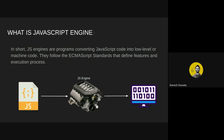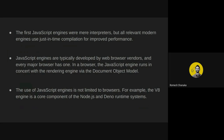Whether we run JavaScript in the browser, in Node.js, or on an IoT device, it is always the engine that runs it for us. The first JavaScript engines were mere interpreters, but all relevant modern engines use just-in-time compilation for improved performance. JavaScript engines are typically developed by web browser vendors — Chrome, Firefox, and every major browser has one. The use of a JavaScript engine is not limited to browsers; for example, the V8 engine is a core component of the Node.js and Deno runtime systems.